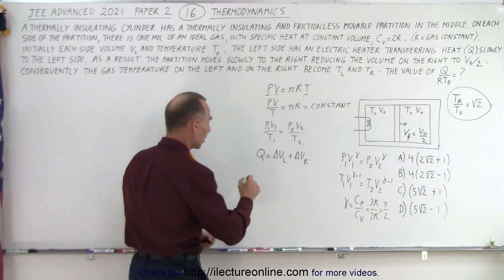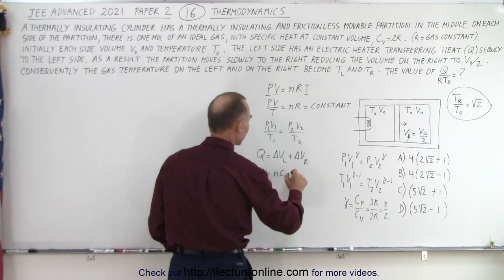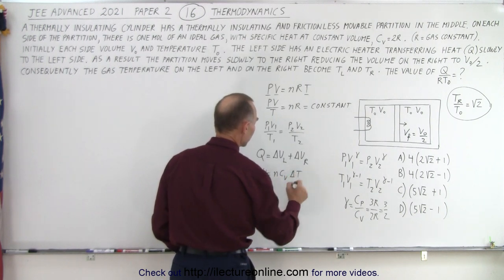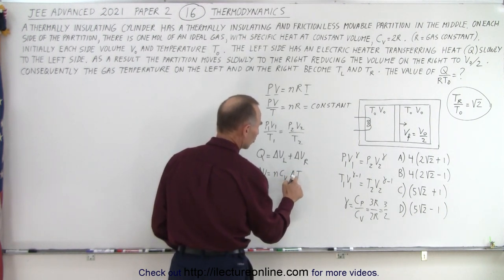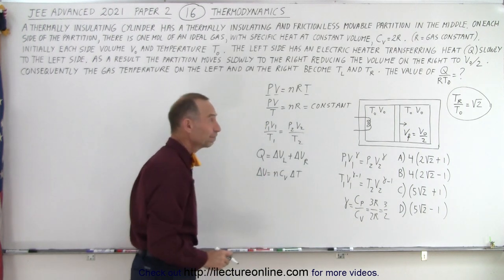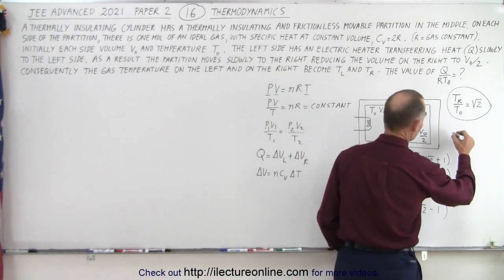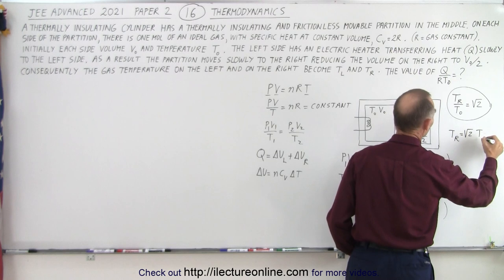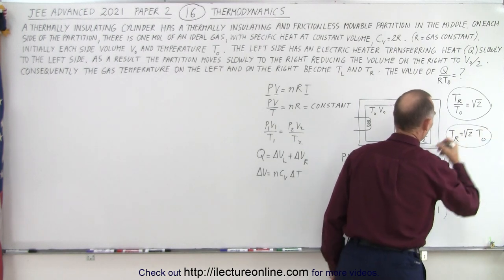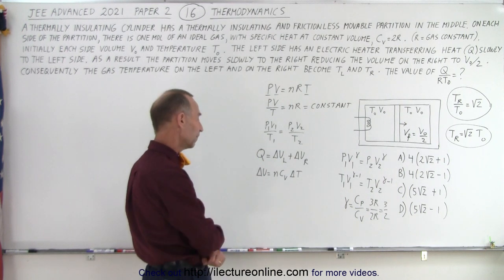Remember that the equation for delta U is equal to N·C sub V·delta T. So we need to find the change in temperature for the left side and the change in temperature for the right side. For the right side we already have that, because T on the right equals the square root of 2 times T initial. So all we need now is T on the left side.